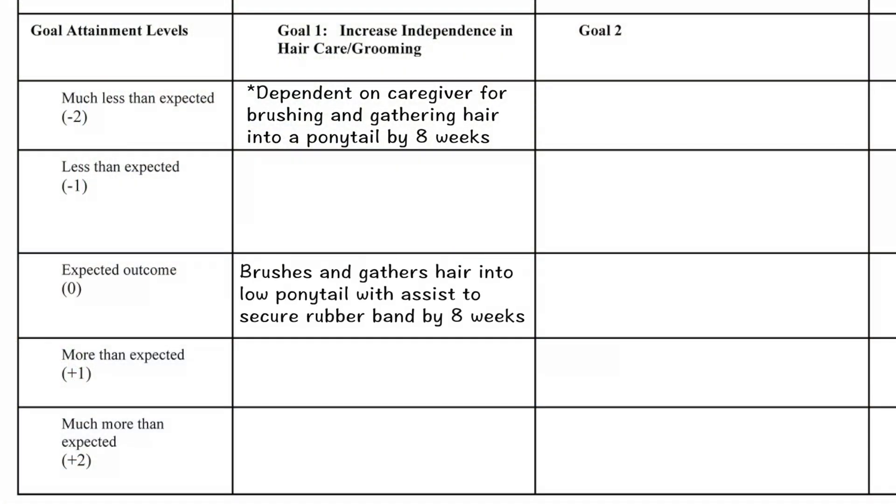During scaling, be sure to clarify the goal conditions. For example, what does minimal versus moderate versus maximum assist mean? These terms can vary from therapist to therapist. What do you think is a better than expected outcome for Ashley? This is our plus one — it's not likely that you'll reach this, but it's possible. I think that she should be able to pull her hair in a low ponytail independently by eight weeks. That would be quite an improvement in her upper extremity strength and range of motion, so that's a good plus one — go ahead and write that in.